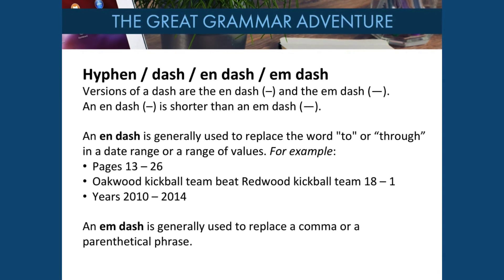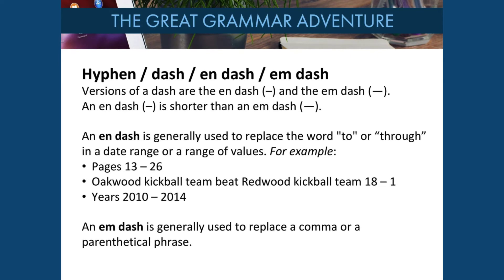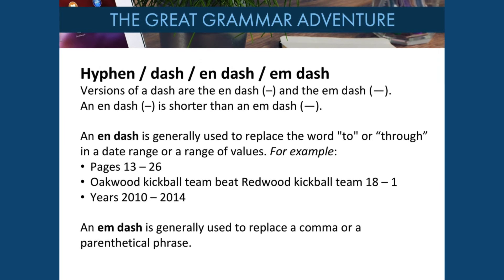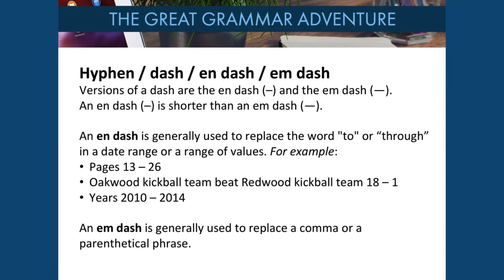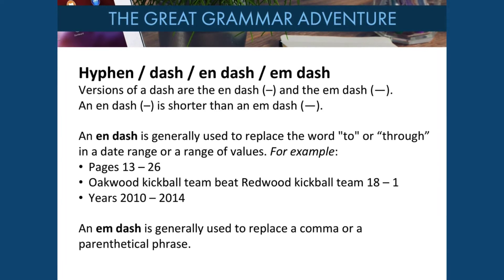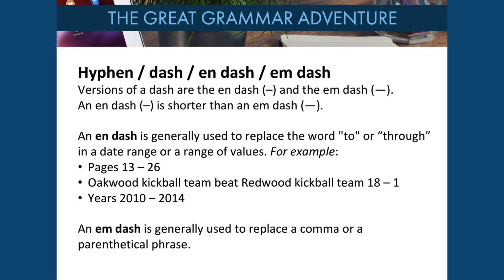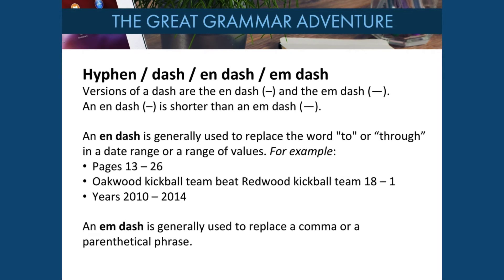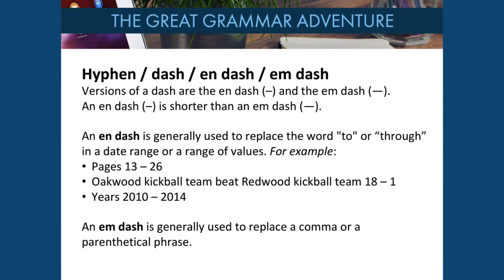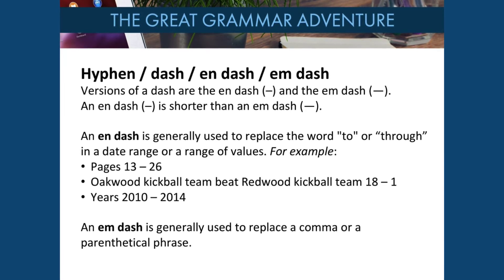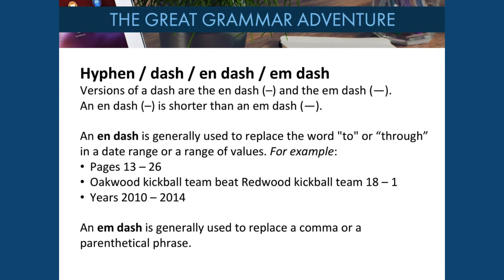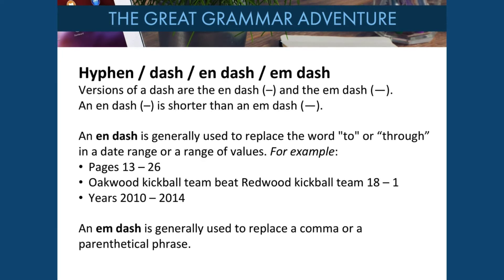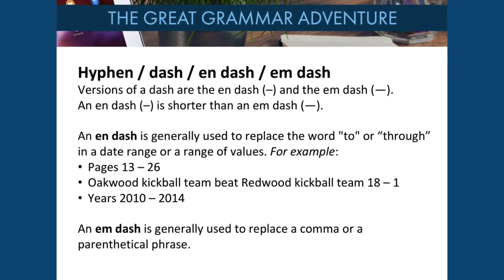There is more than one version of a dash: an en dash and an em dash. The en dash is about the width of the letter n on your keyboard, and the em dash is about the width of the letter m — so the em dash is a little bit longer. An en dash is generally used to replace the word to or through in a date range or range of values. For example: pages 13–26, years 2010–2014, or Oakwood kickball team beat Redwood kickball team 18–1.